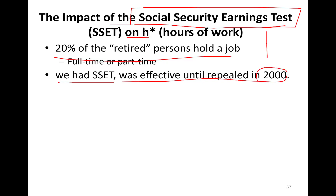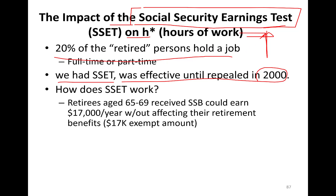How does the Social Security earnings test work? Retirees aged 65 to 69 received Social Security benefits — this is before 2000 — and could earn $17,000 a year without affecting their retirement benefits. So $17,000 is the exempt amount.